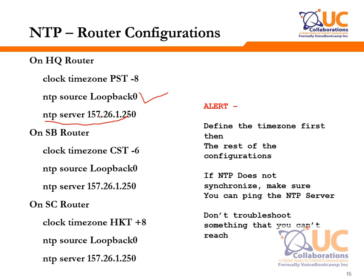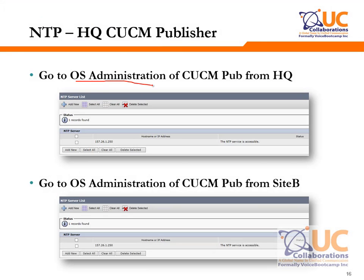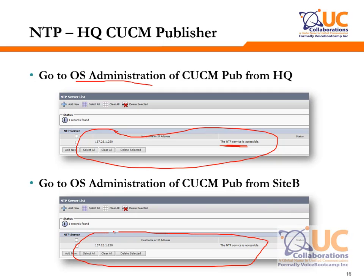For Site B, the time zone is Central Time, minus 6 — set the source loopback and NTP server address. For Site C, which is Hong Kong at UTC+8, set the loopback and NTP server address accordingly. On the Call Manager side, go to OS Administration, navigate to NTP Settings, and ensure the NTP server is listed and accessible. Do this for both the HQ publisher and the Site B publisher — go to OS Administration and verify the NTP server list.